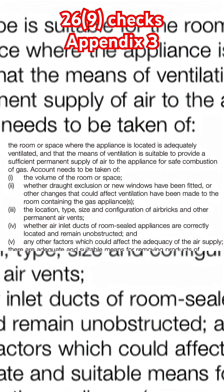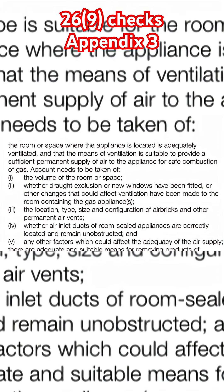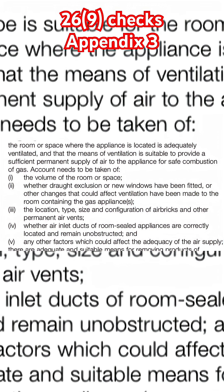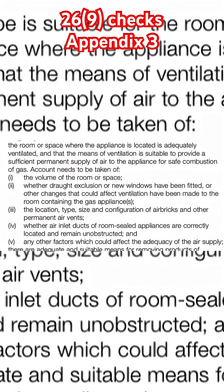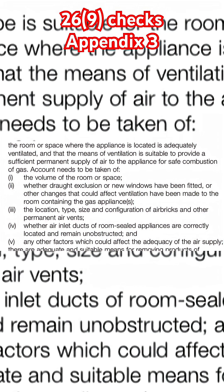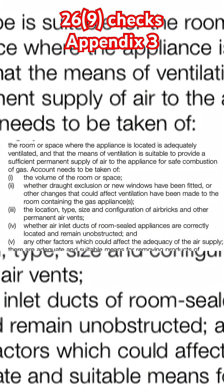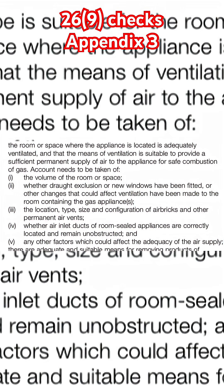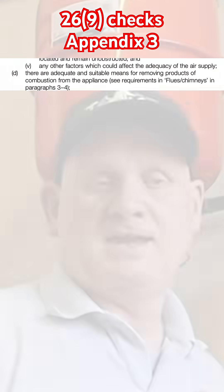C4: where air inlet ducts of room-sealed appliances are correctly located and remain unobstructed. And finally, C5: any other factors that could affect the adequacy of the air supply.